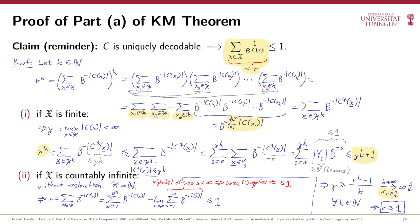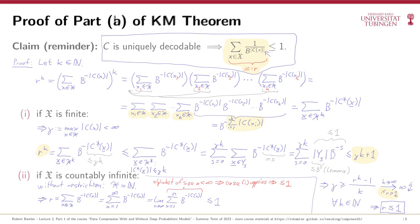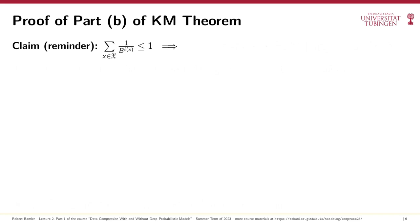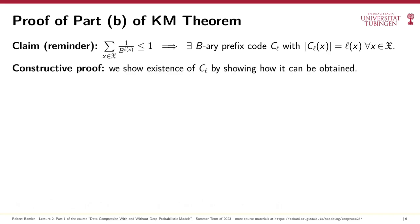We've now concluded our proof of Part A of the Kraft-McMillan Theorem. Part A starts from a uniquely decodable code and states that the Kraft inequality must hold. The Kraft inequality expressed in codeword lengths will play an important role when we prove a bound on expected codeword length in the next video. Now let's prove Part B. In Part B, we are given target codeword lengths L for each symbol x, and if these satisfy the Kraft inequality, there exists a b-ary prefix code C_L with precisely these target lengths. The proof is constructive and will give rise to two entropy coding algorithms: Shannon Coding, introduced in the next video, and Arithmetic Coding, introduced in Lecture 5.